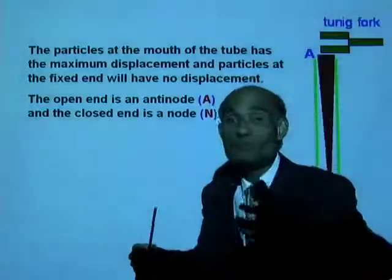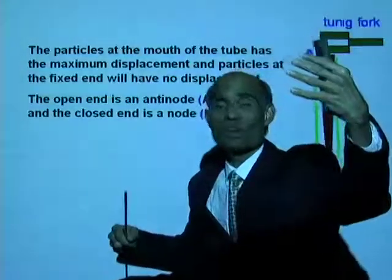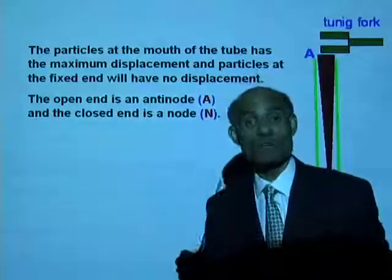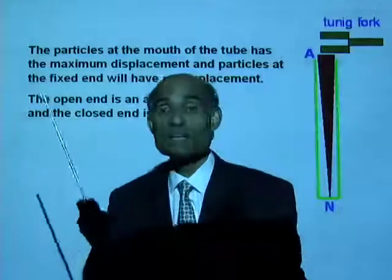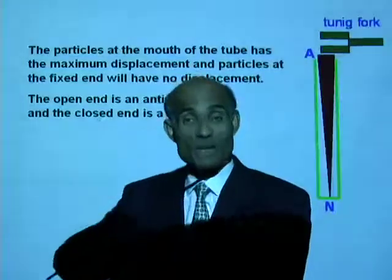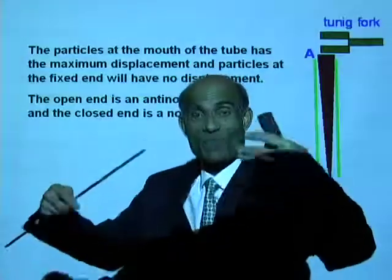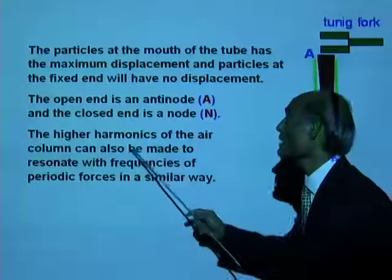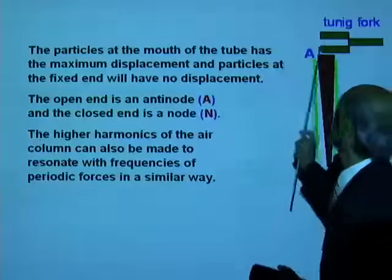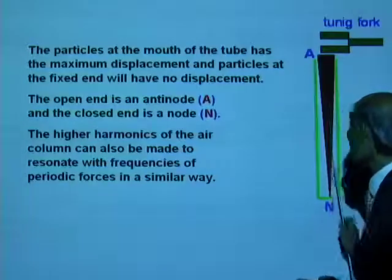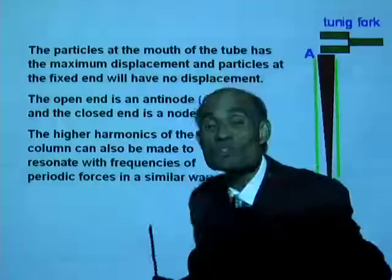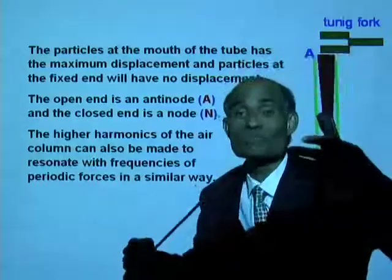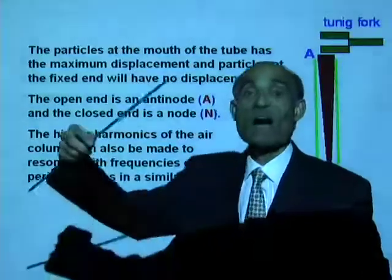The mode may be the fundamental mode or higher modes of vibration — what you call harmonics, or overtones. The vibration of the air column inside the tube is very similar to vibrations of a stretched string: you have the fundamental, the second harmonic, the third harmonic, and so on. The higher harmonics of an air column can also be made to resonate with the frequency of the periodic force — the air column will resonate not only at its natural frequency, but also at twice, three times, and so on its natural frequency.